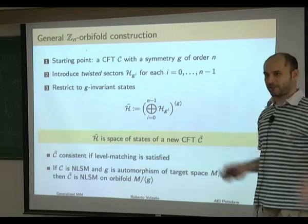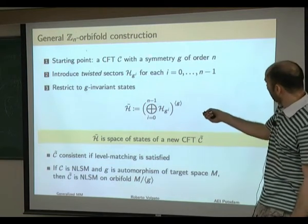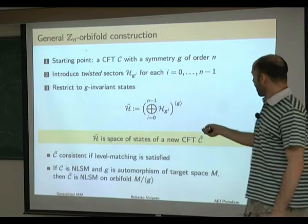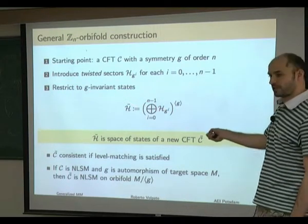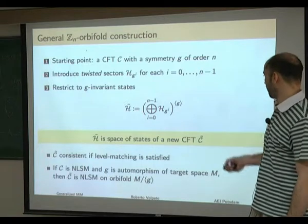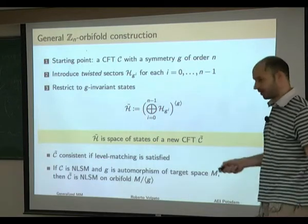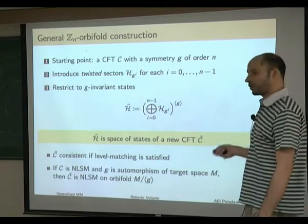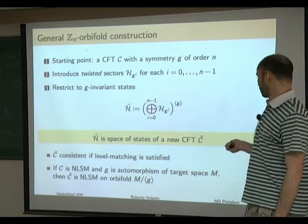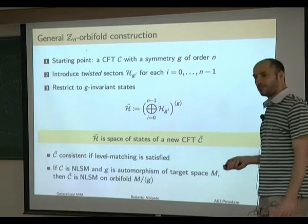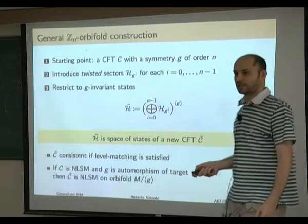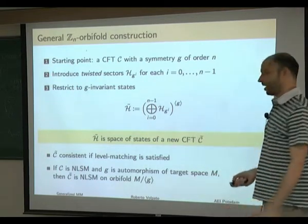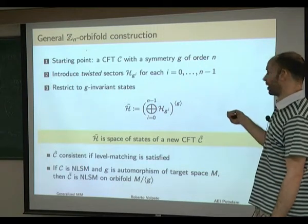Let me briefly remind you of the basic facts about torus orbifolds. To take an orbifold, one starts with a CFT with symmetry G of order N, introduces twisted sectors, and restricts to G-invariant states. This vector space turns out to be the space of states of a new conformal theory — the orbifold CFT. For this to be a well-defined CFT, there is a level-matching condition: in twisted sectors, the spin — the difference between left and right conformal weight — must be an integer over N.